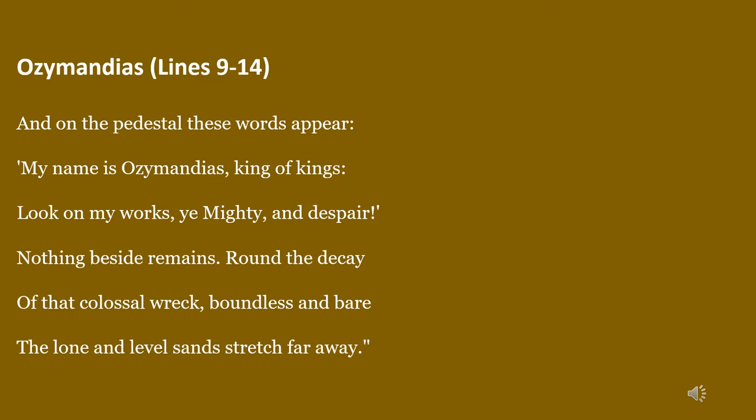'Look on my works' — look at my achievements. 'Works' means achievements, the mighty feats that King Ozymandias accomplished in his lifetime. 'Ye' means 'you' — this is ancient English for 'you'. 'Ye Mighty' addresses anyone who thinks himself mighty, standing before the statue. The words convey: 'You think yourself as mighty, but look — I am standing here, I am mightier than you.' 'And despair' means to be dejected — look at me and despair, for you are not as mighty as I am.